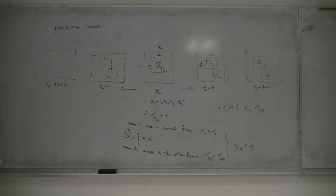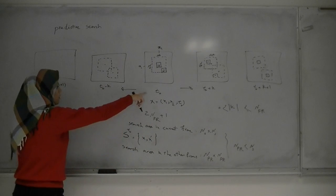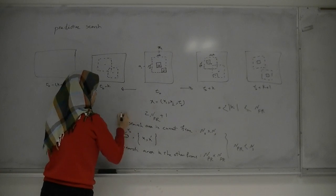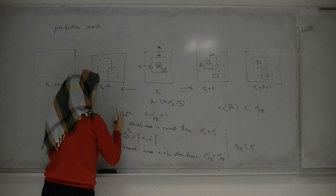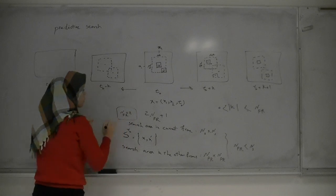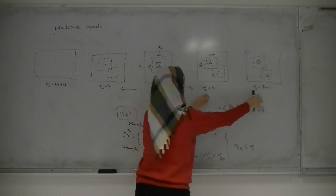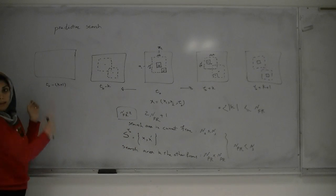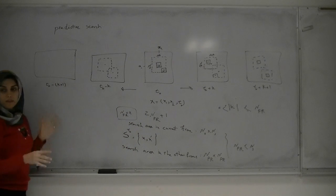NFR applies to both sides. For example, if NFR is equal to two, we search just two frames from this direction and two frames back - just these frames, not all of them.